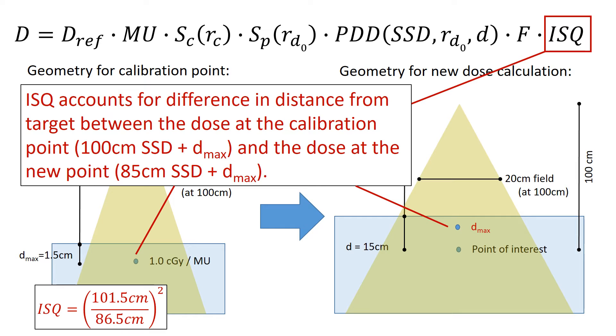And so our inverse square correction is going to be 101.5 cm divided by 86.5 cm squared. And that's basically just taking the dose difference due to the inverse square law, going from that point that's farther away that we started at, the calibration point, to our new normalization point.